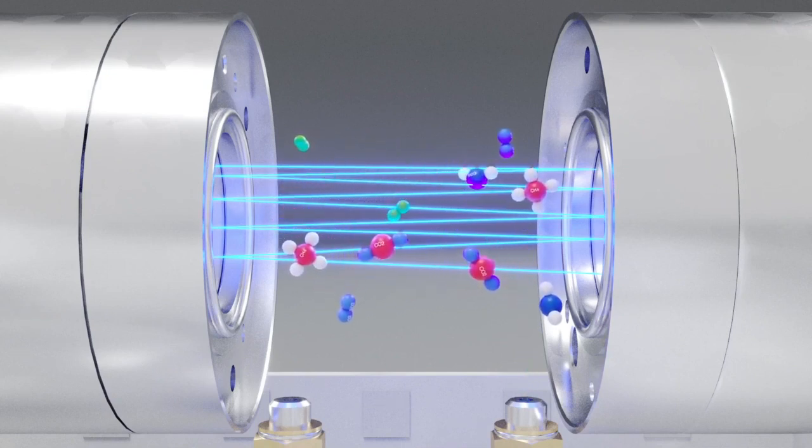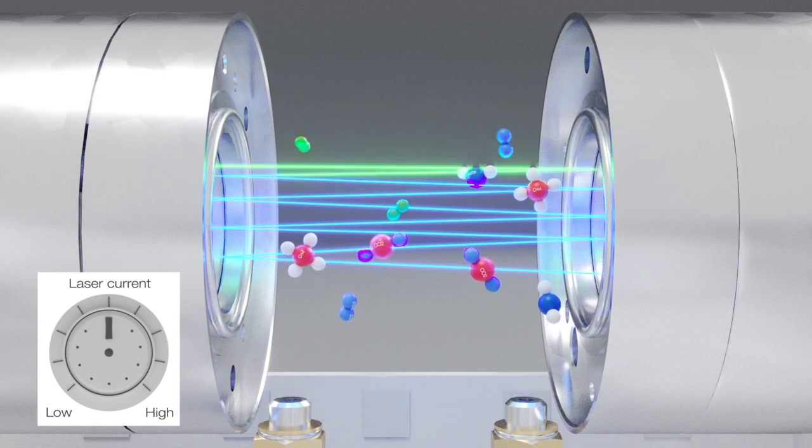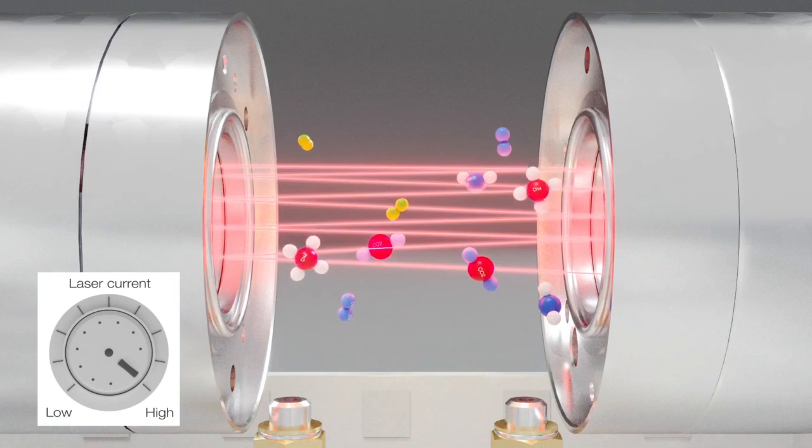In breath analysis, for example, CO2 and CH4 are relevant gases whose spectrum partly overlaps. Thanks to the narrow laser beam, these gases can be measured simultaneously without interference or cross-sensitivity.